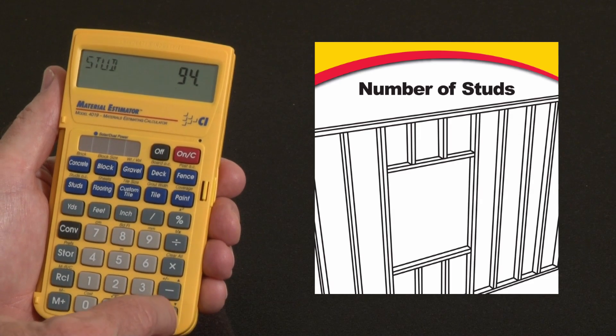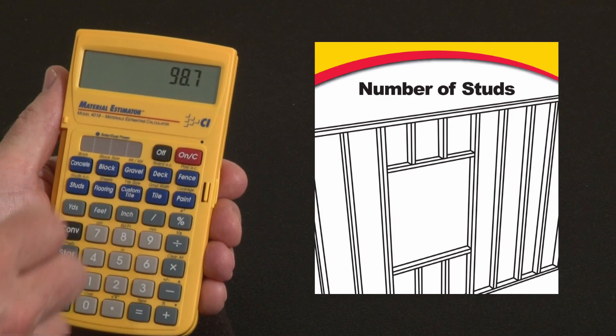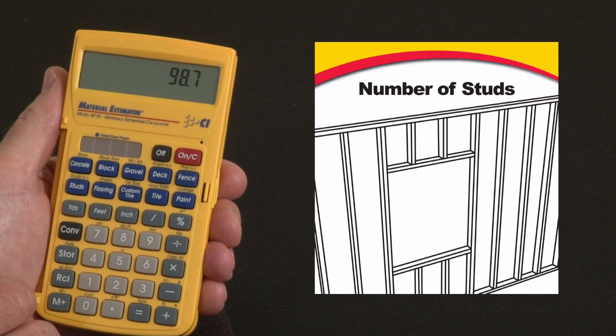You can also add, say, plus 5% for waste to get a total number of studs, 98.7.